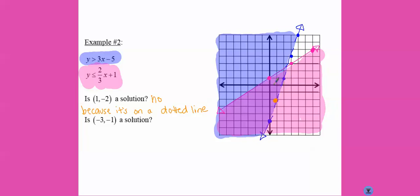Is negative three, negative one a solution? Yes, because it's on a solid line that touches both colors.